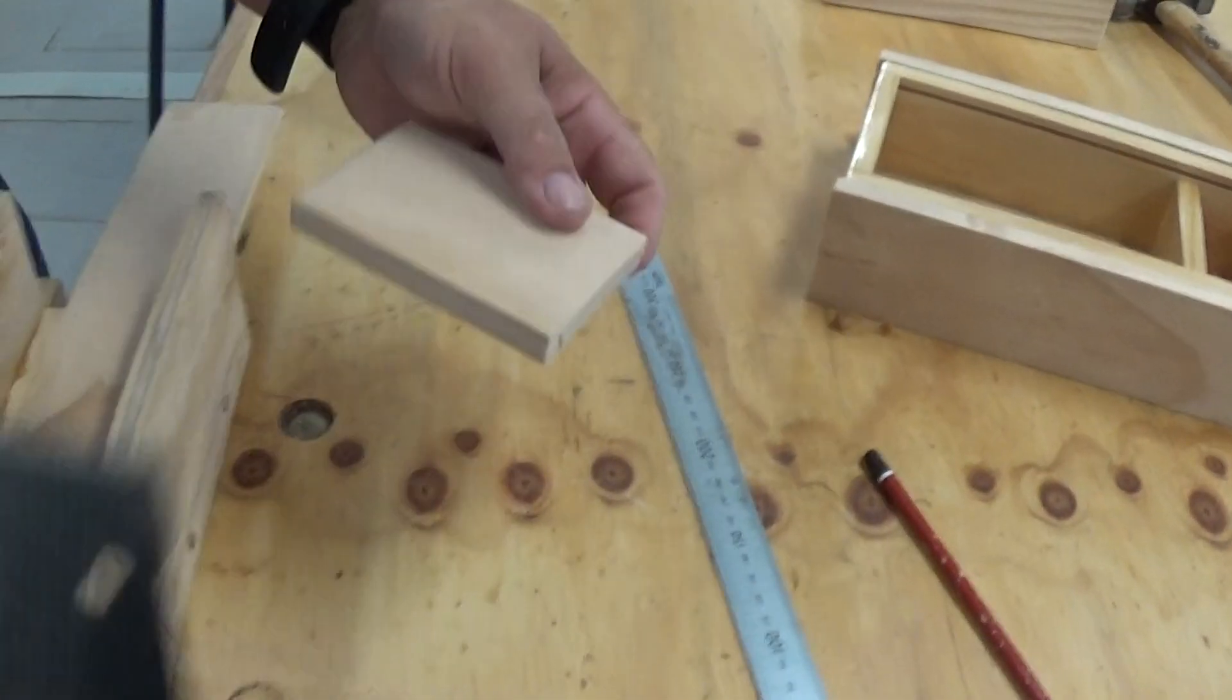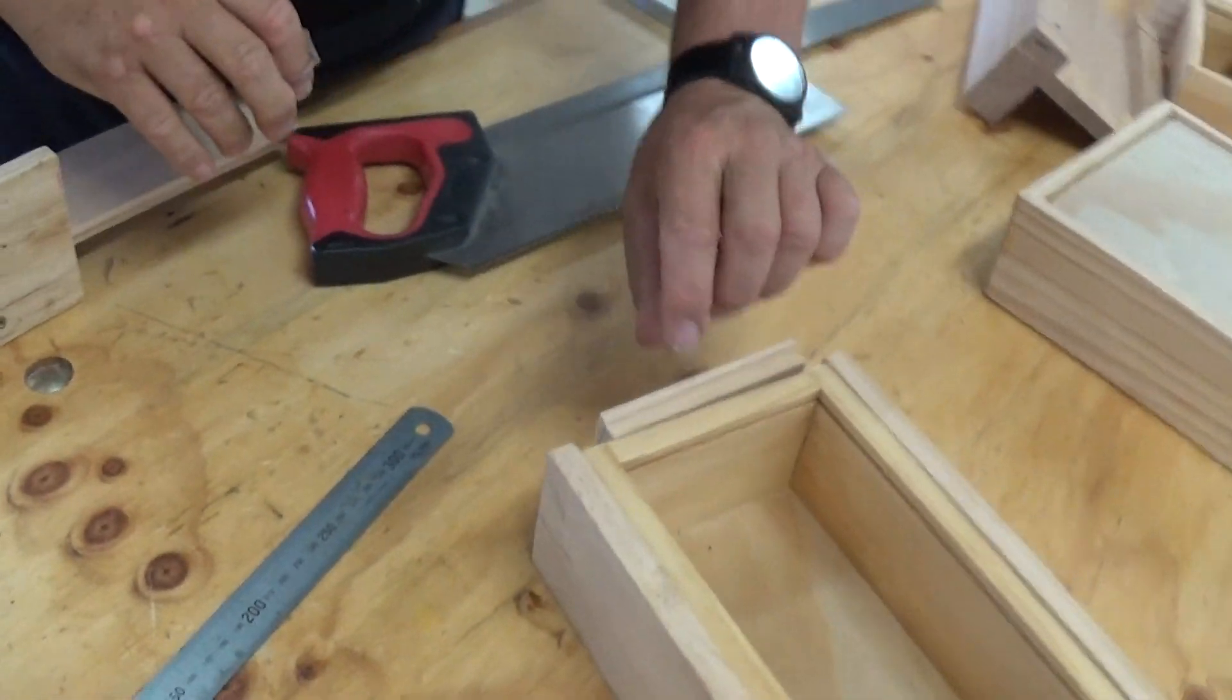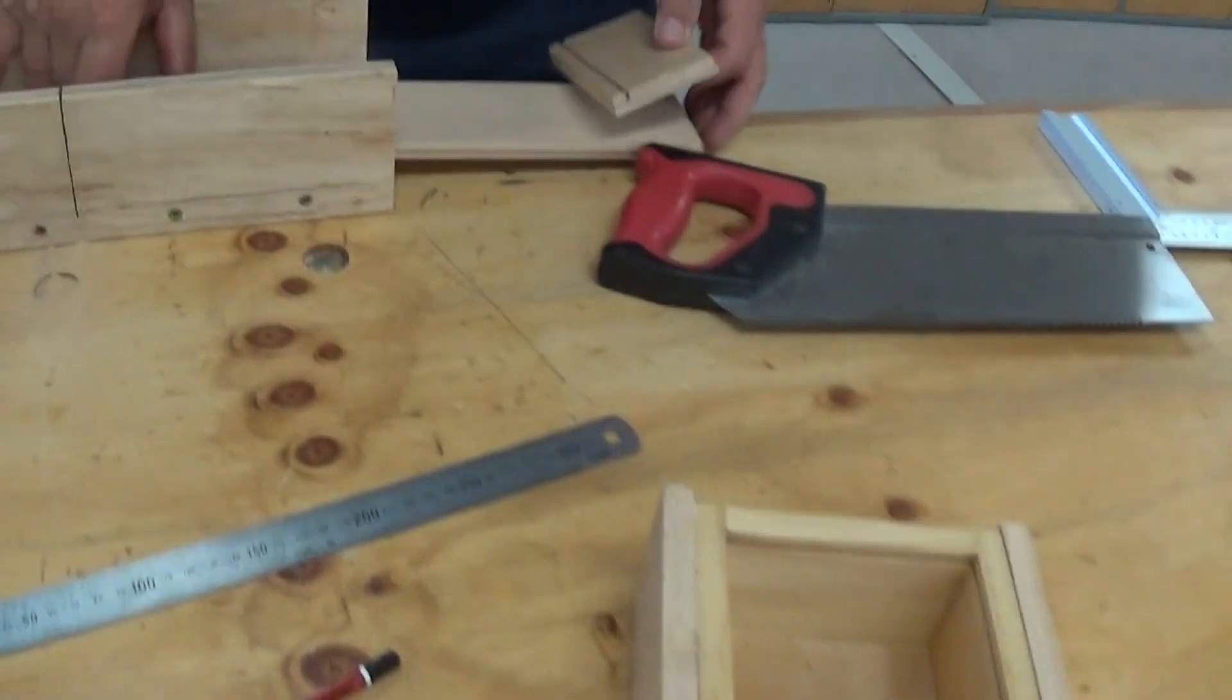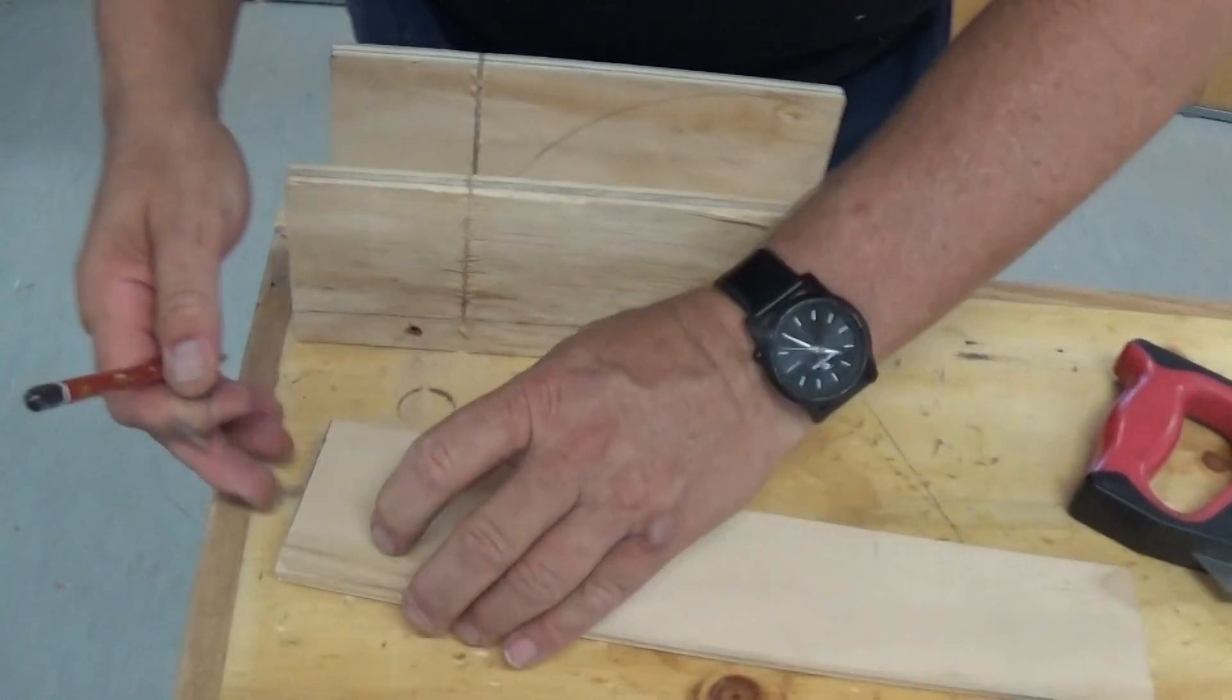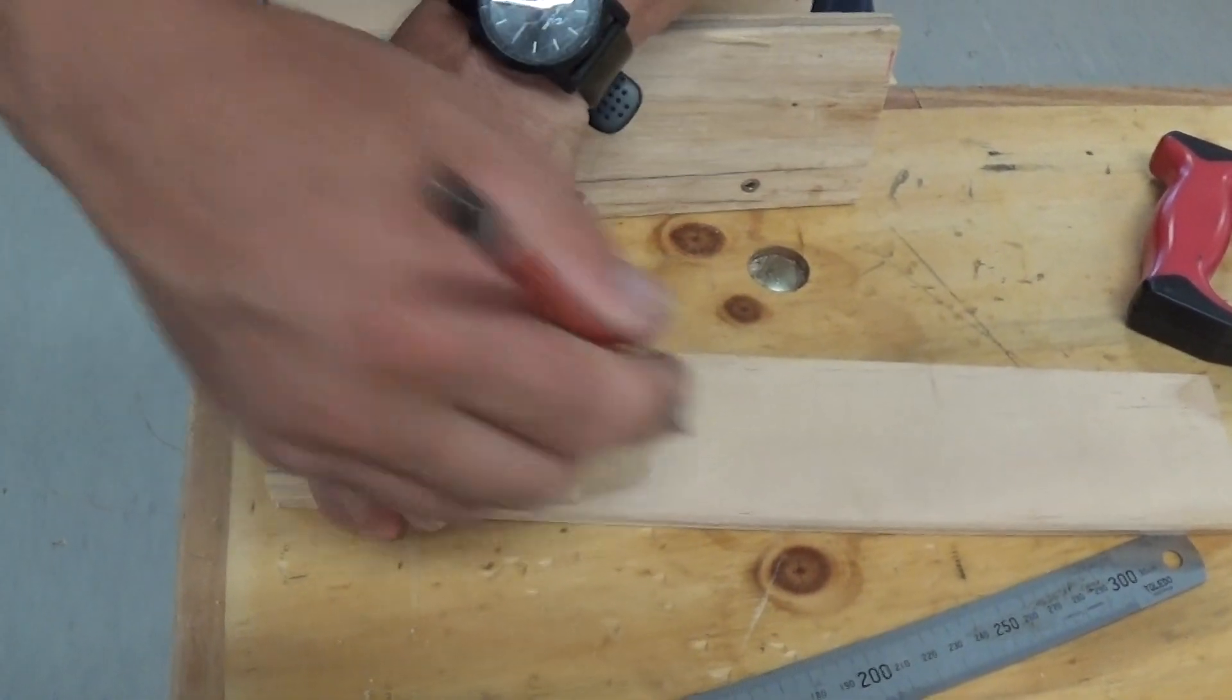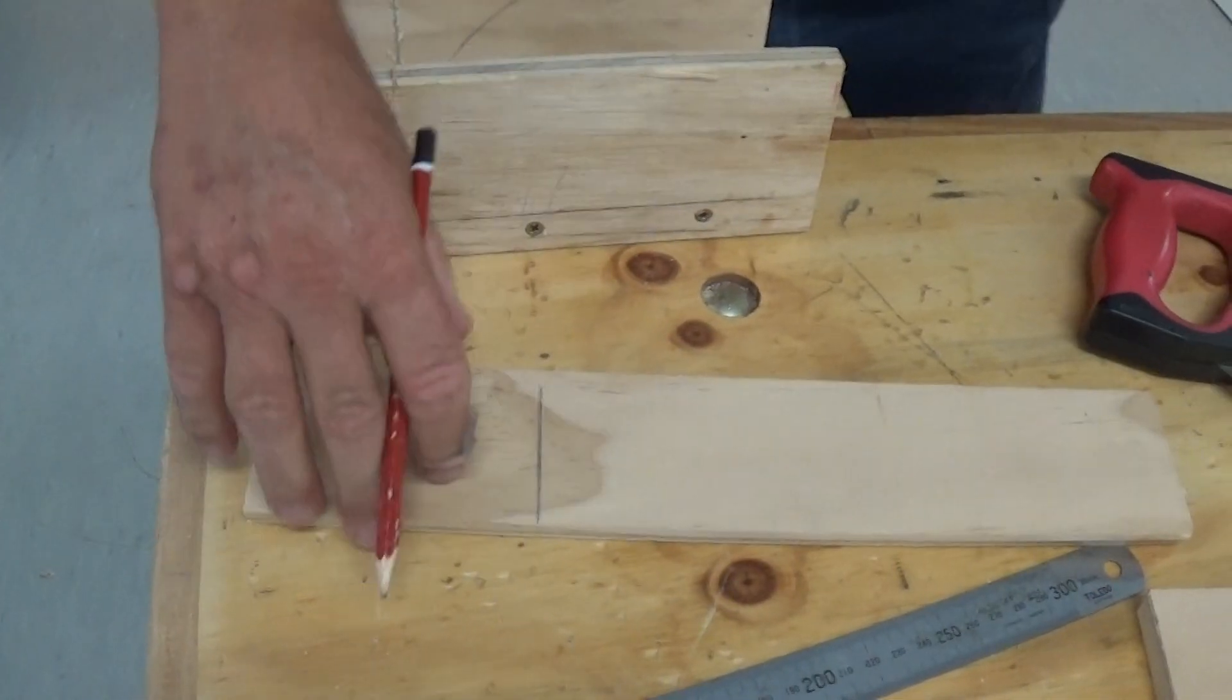So we need two of these, one for this end and one for that end. And if we've got some spares, we can put another one in there. Once again, this is like a measuring tool, this is the measurement we want. We'll just take that square.